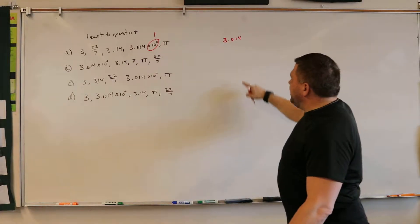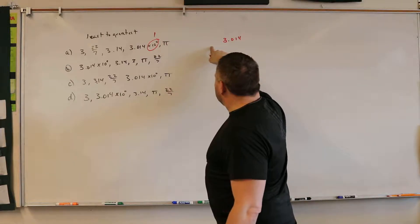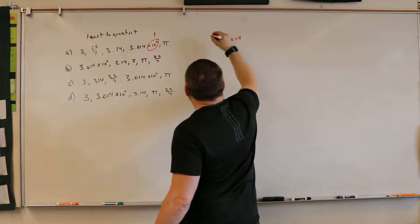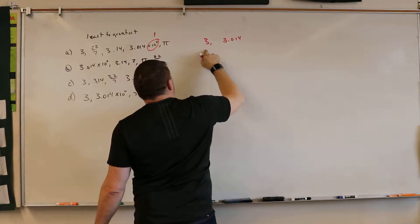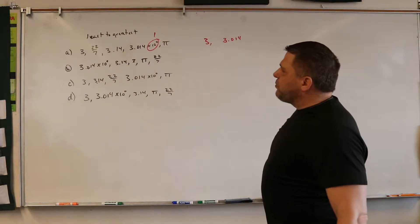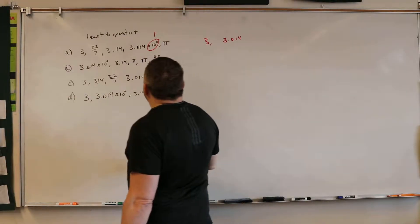Well, is 3 bigger than this or is it smaller? Smaller. Smaller, yeah. So it would go 3 and then this. Right? Now we've got all these things.